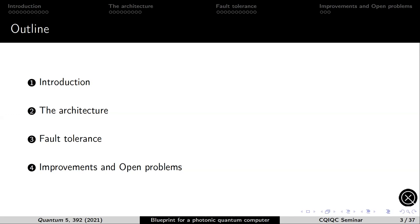I'll begin with a broad introduction about all the different ingredients that go into the architecture. Then I'll go through the modules of the architecture, discuss the fault tolerance analysis, and give a highlight of one recent improvement and the open problems that we're seeking to solve.